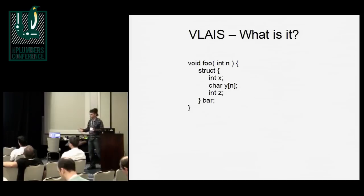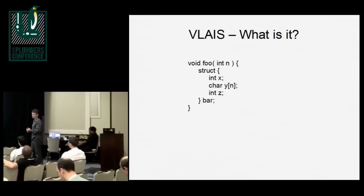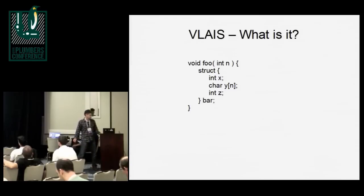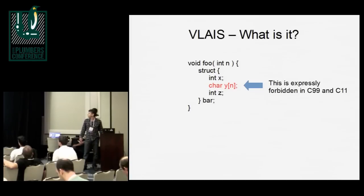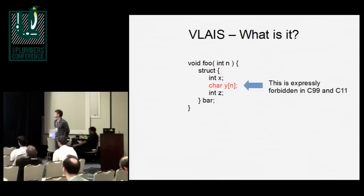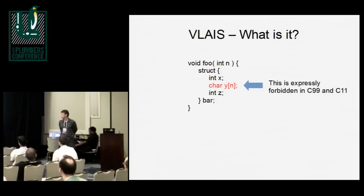What is this? Variable length arrays are part of the C standard that are supported, but they are not allowed in structs. So if you see a simple structure like that, that's the part that's bad. That's explicitly forbidden in both the C99 and C11 standards, but it is an extension that was added to GCC.